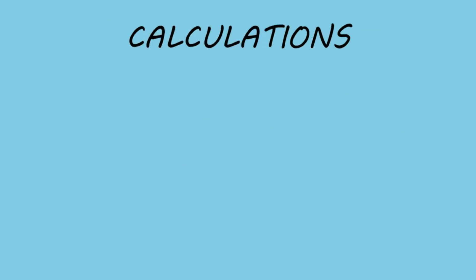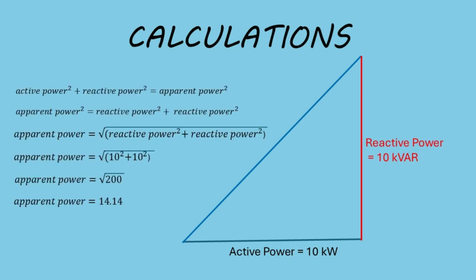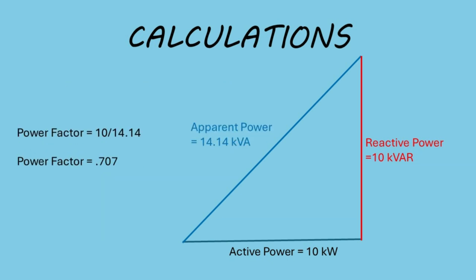Let's do some quick calculations. In a circuit with 10 kilowatts of active power and 10 kVar of reactive power, the apparent power is the hypotenuse of the triangle, calculated using the Pythagorean theorem. So you get 14.14 kVa as the apparent power. The power factor is the cosine of the phase angle, or 10 divided by 14.14, which equals 0.707.